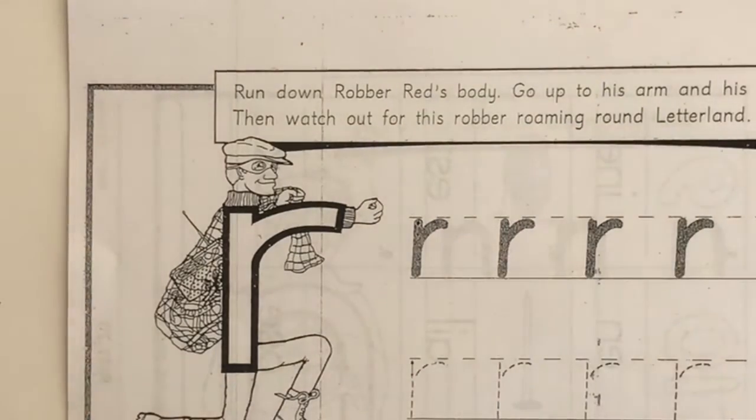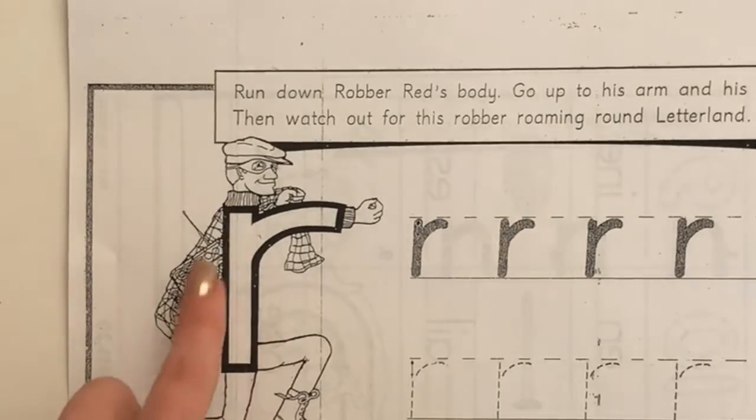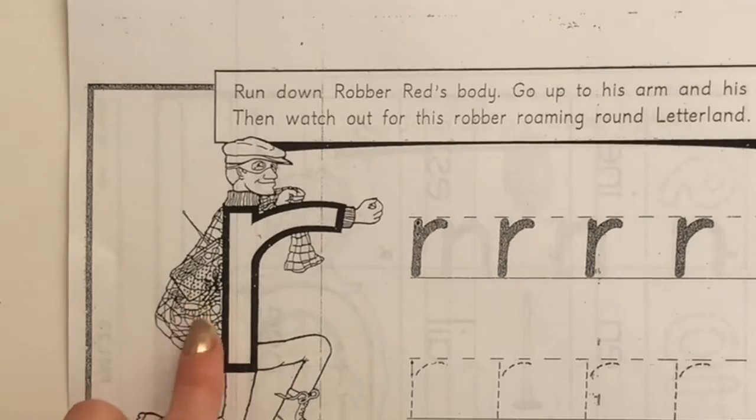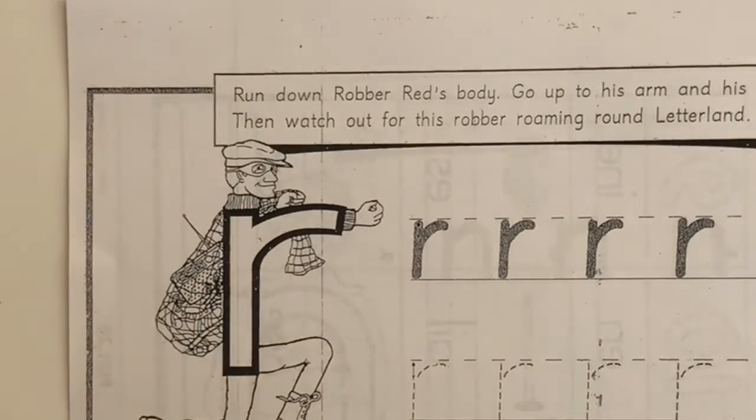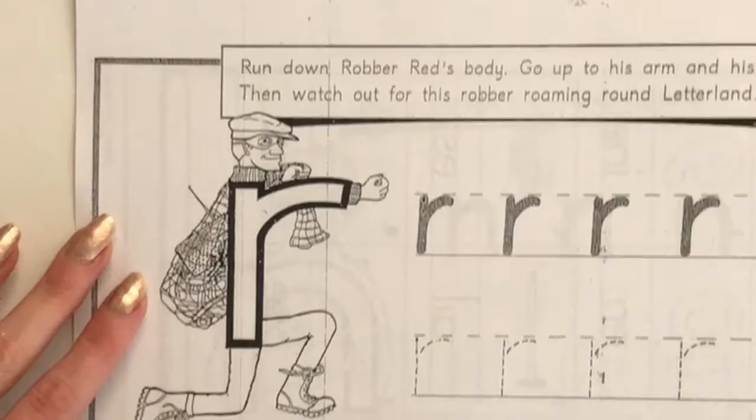In this letter land story, this character, he's not very nice. He takes things that do not belong to him and he takes things that start with the sound R. And we know in real life, it is not okay to take things from other people and rob. But if you look in his bag, he did take some things that start with R, with the R sound.